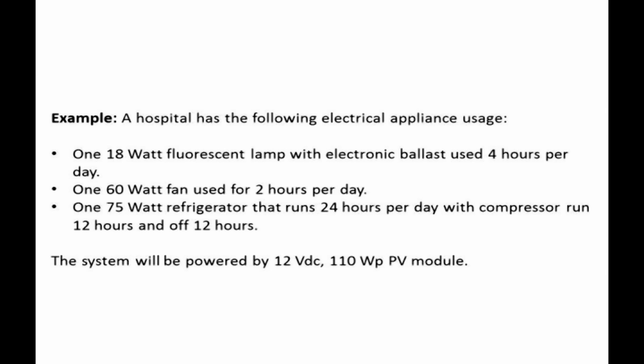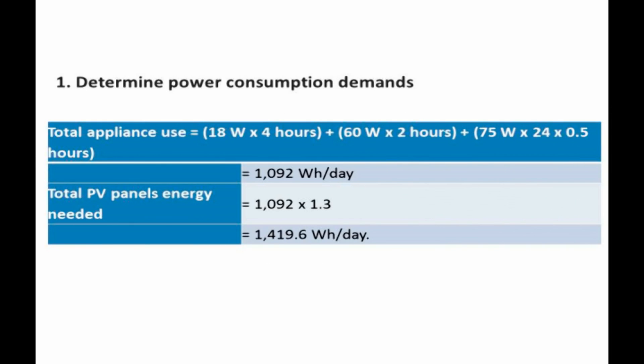Example: A hospital has the following electrical appliance usage — 18 W fluorescent lamp with electronic ballast used 4 hours per day; 60 W fan used 2 hours per day; 75 W refrigerator running 24 hours per day with the compressor running 12 hours and off 12 hours. The system will be powered by a 12 VDC, 110 Wp PV module. Step 1: Total appliance use = (18 W × 4 h) + (60 W × 2 h) + (75 W × 24 × 0.5 h) = 1,092 Wh/day. Total PV panel energy needed = 1,092 × 1.3 = 1,419.6 Wh/day.